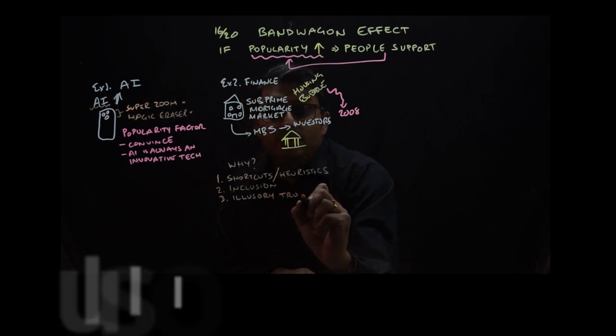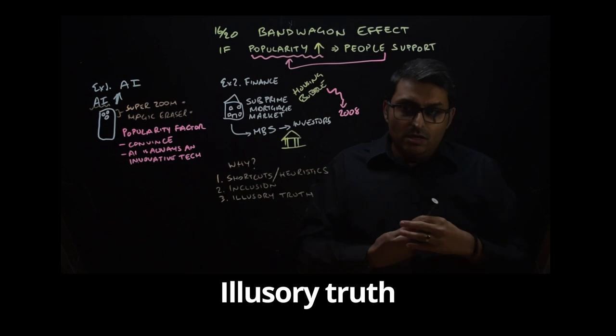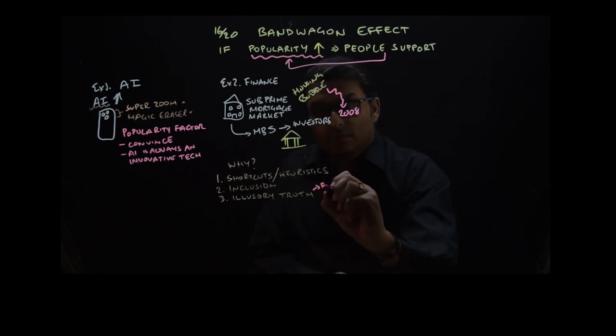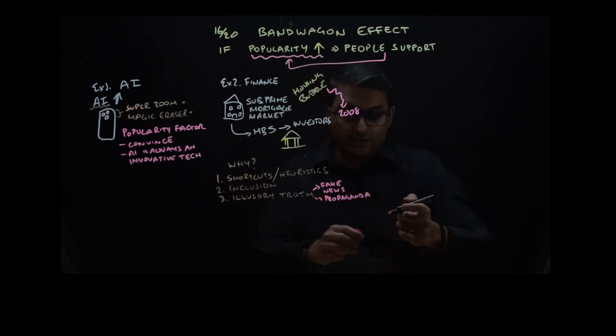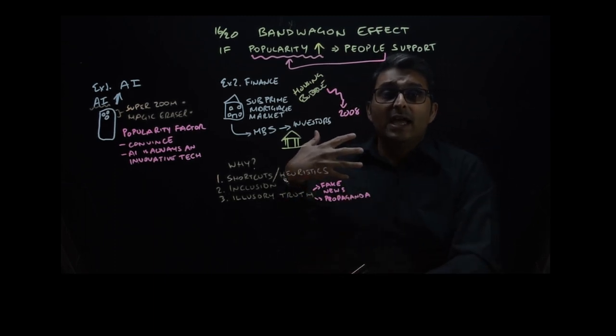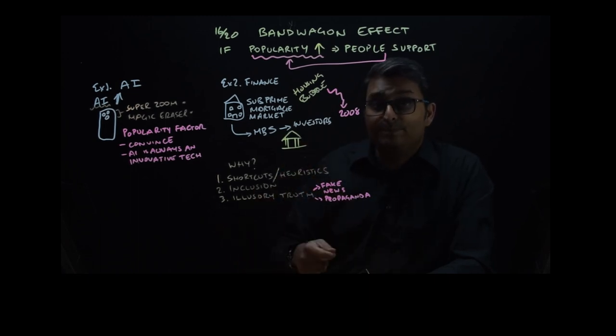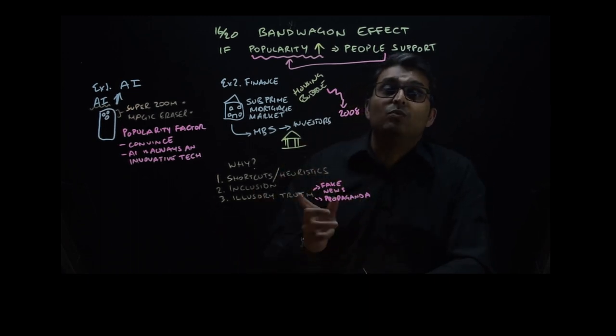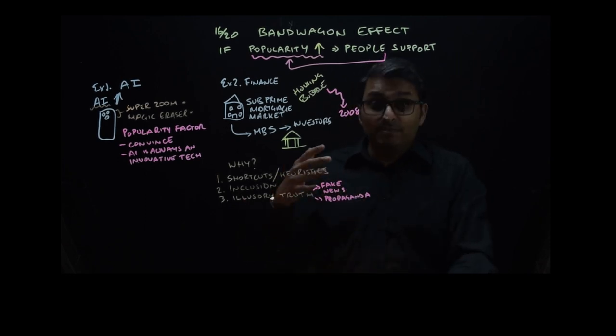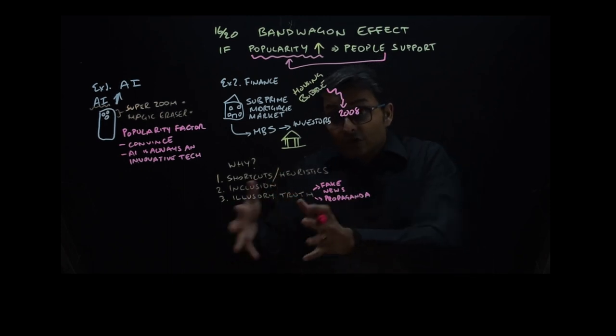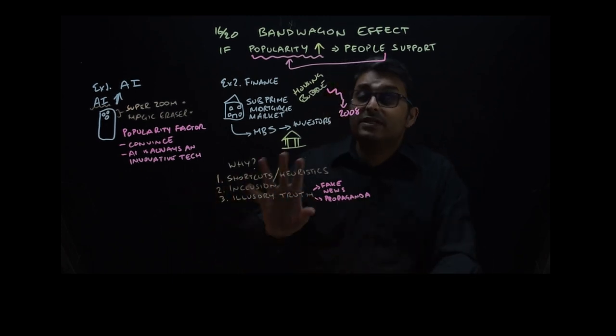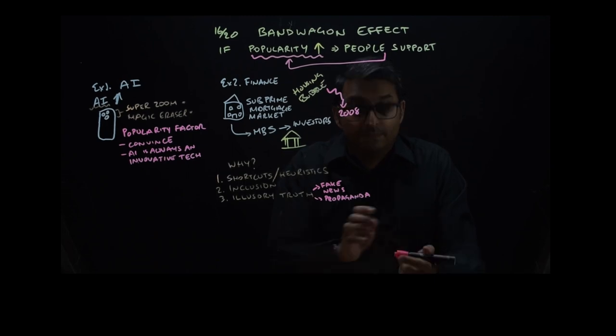Number three: illusory truth. I'm going to add two terms here - fake news and propaganda. Fake news and propaganda work because they expose people to the same idea repeatedly. This repetition can affect what people believe is true, as people tend to believe claims are more true if they have been exposed to them more, and therefore begin to support them simply because of this exposure. And so this is another why of why you may jump on to a bandwagon or exhibit the bandwagon effect.